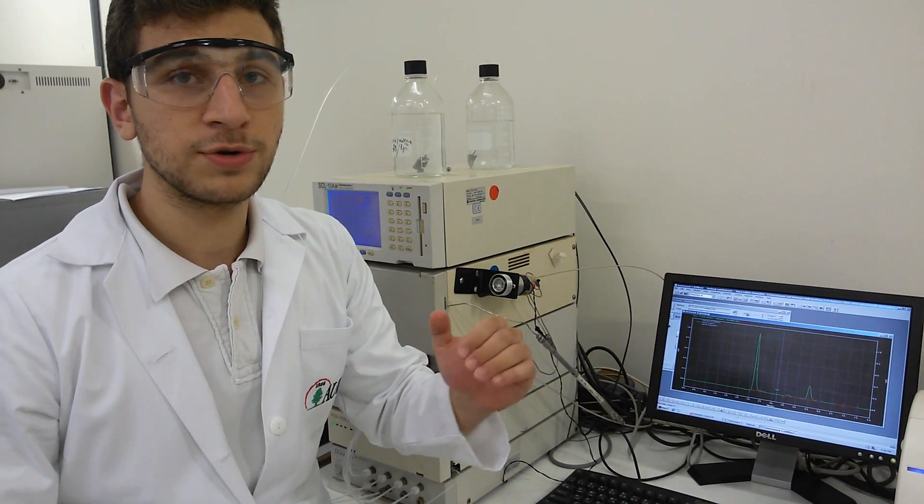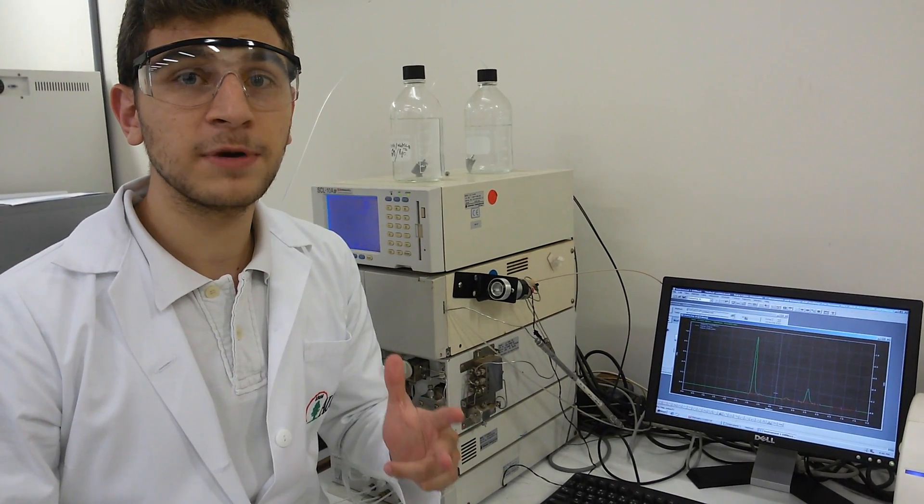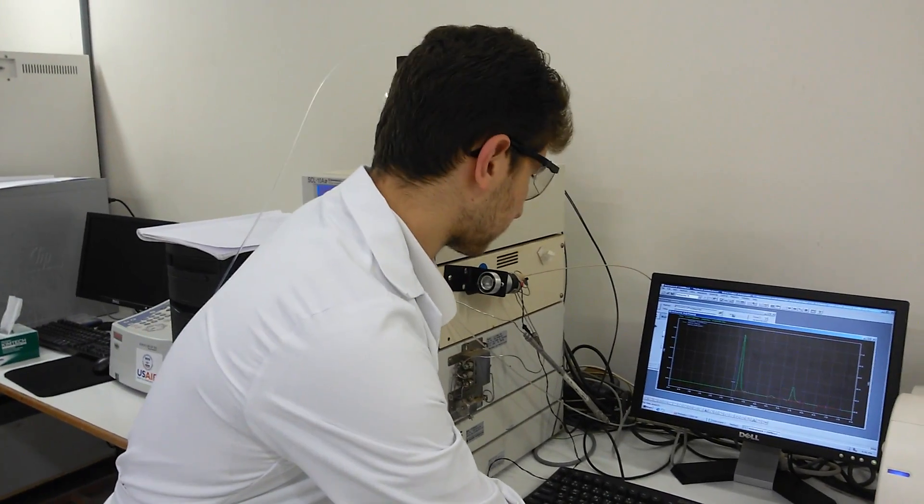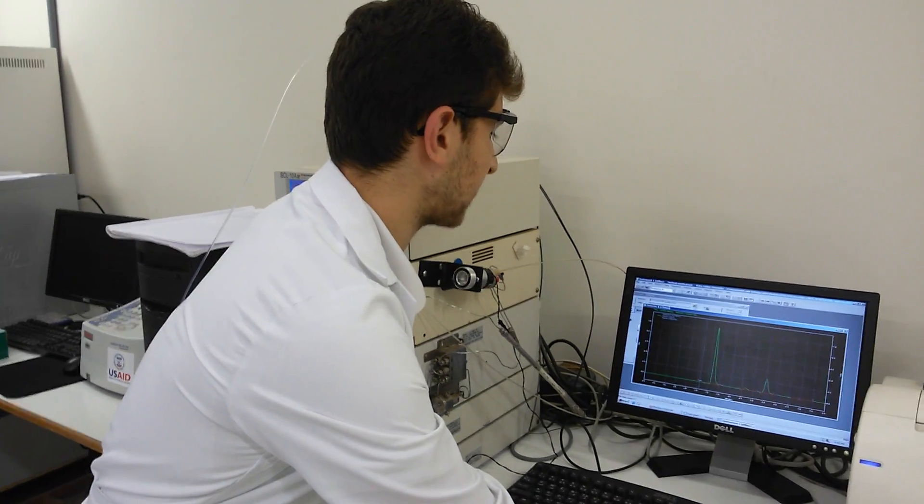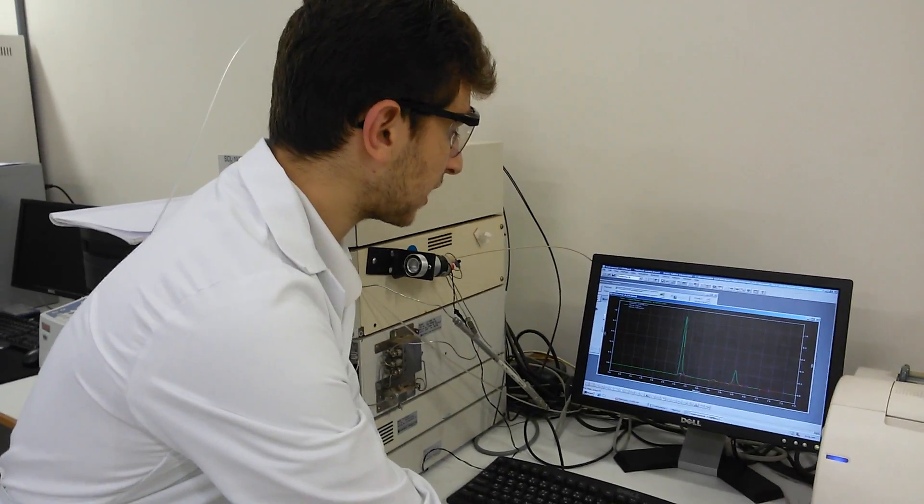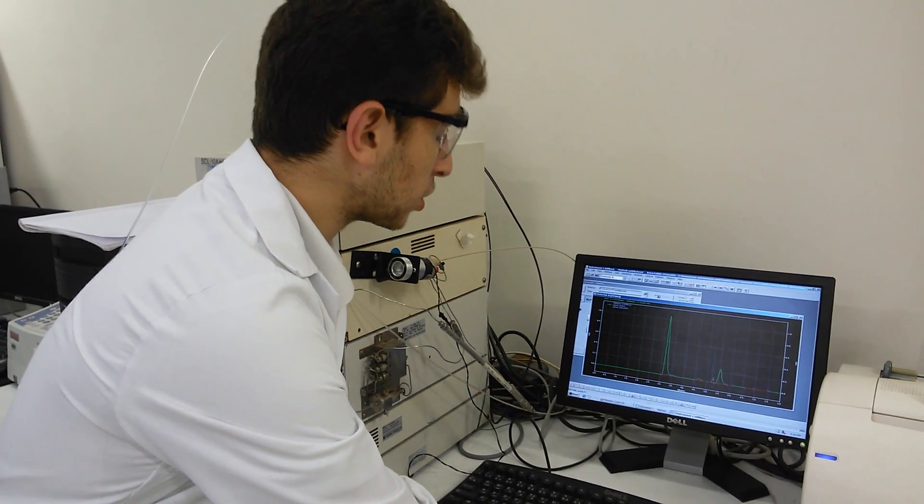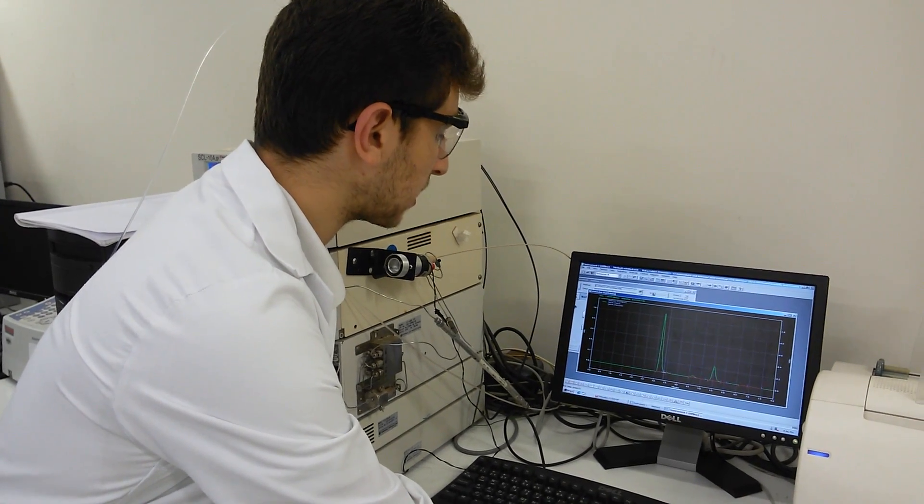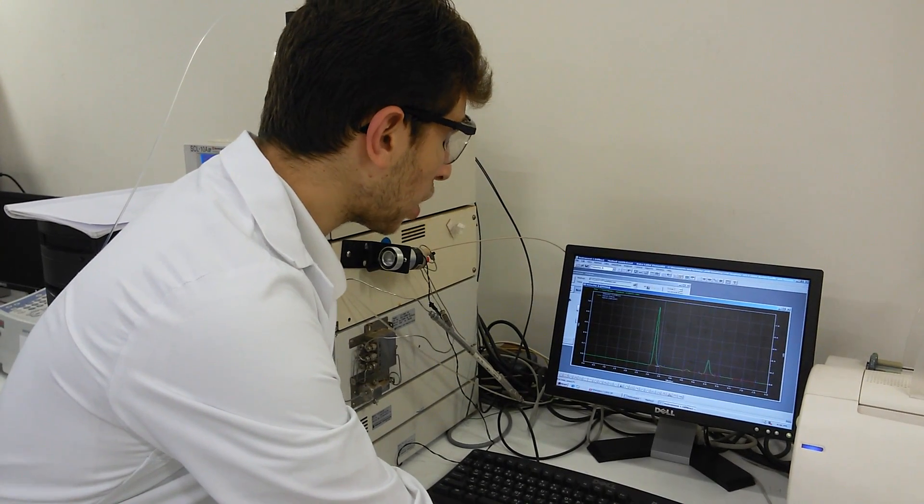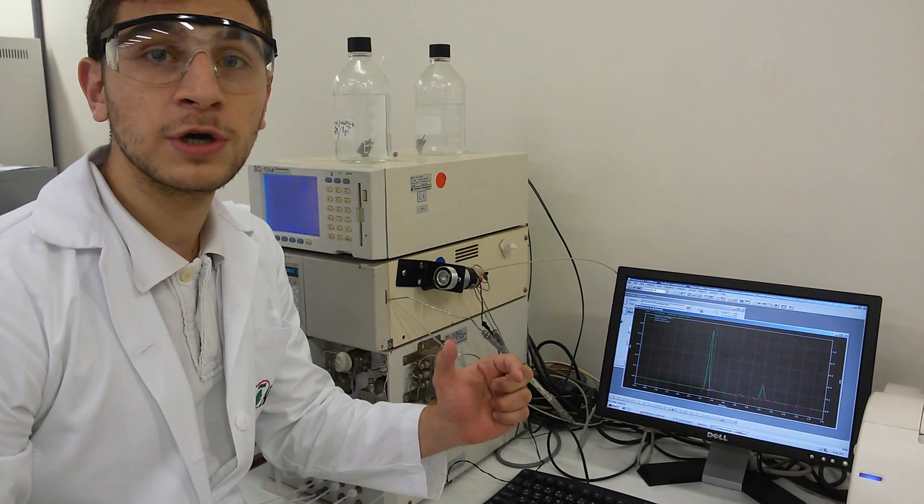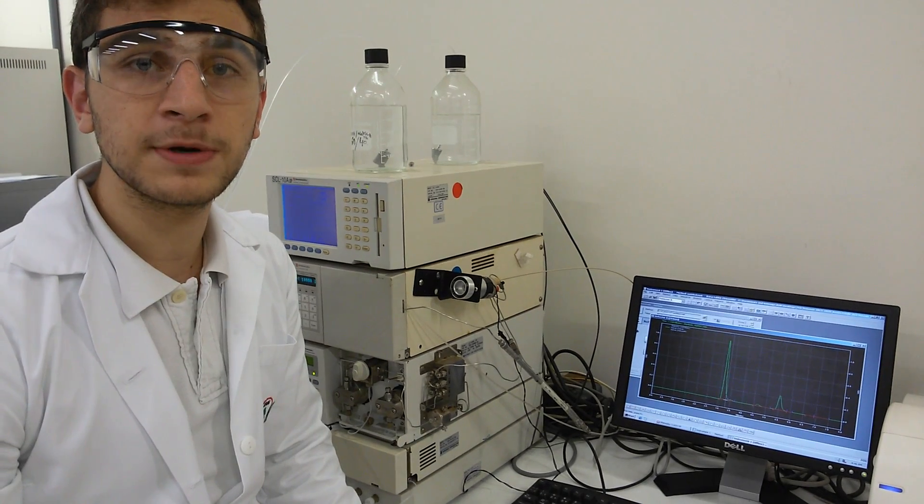After building our calibration curve by plotting the peak areas over the concentration, we get three calibration curves for every active ingredient. Now, we need to open, we need to see the signal of our tablet, we need to integrate for every peak area. For example, this, the first peak is for acetaminophen, we take the peak area and we plug it in the equation of the calibration curve of the acetaminophen. By this, we can get the concentration of the acetaminophen. We will do the same thing for the aspirin and the caffeine.